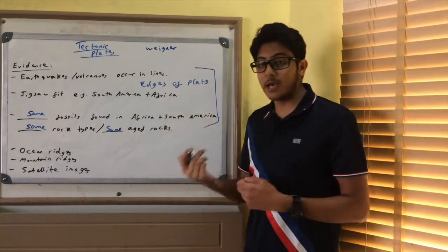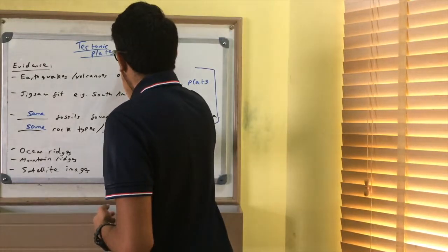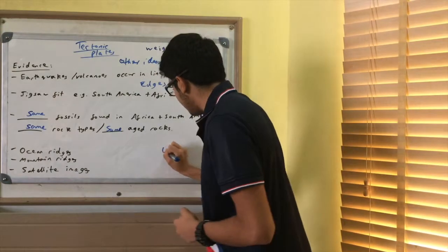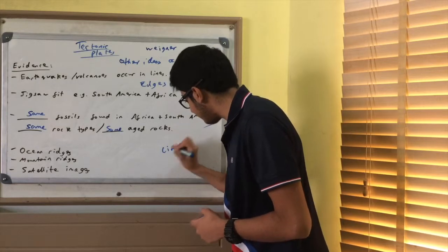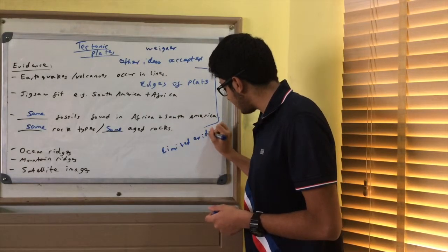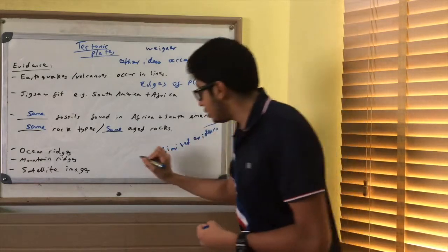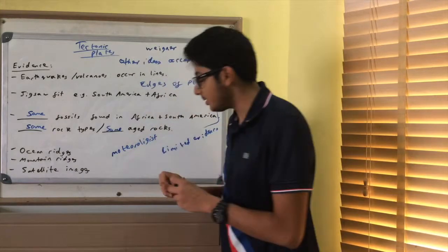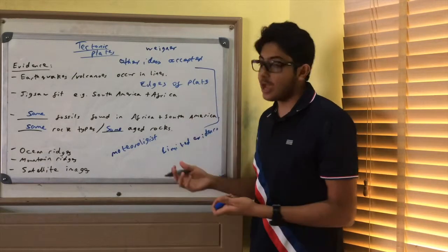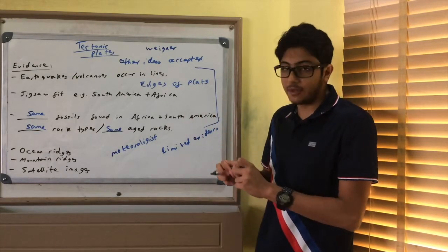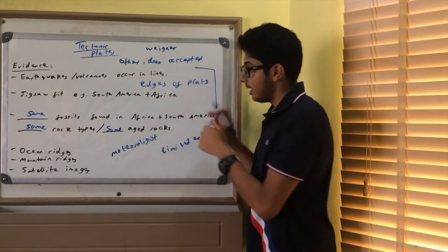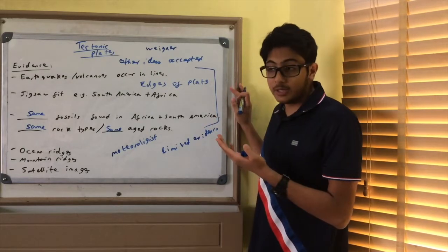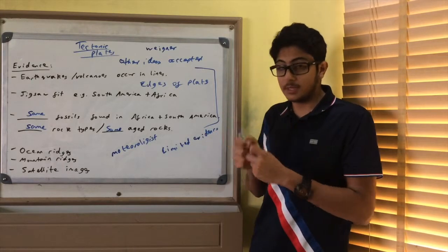Now, Wagner's ideas were initially not accepted. Why? Because other ideas were accepted. And as well as there being limited evidence. Wagner did not have enough evidence to prove what he was suggesting. As well as one more thing. Wagner was a meteorologist. And a meteorologist is basically a fancy word for weatherman. So, he was not specialized in this area, in this field. And so, people do not believe him. So, here are your three points. Other ideas accepted, limited evidence, and meteorologist. In the exam, they could ask you why his ideas were not accepted. Or they could ask you about evidence for plate tectonics. Or they could ask you about it in like a case study format.